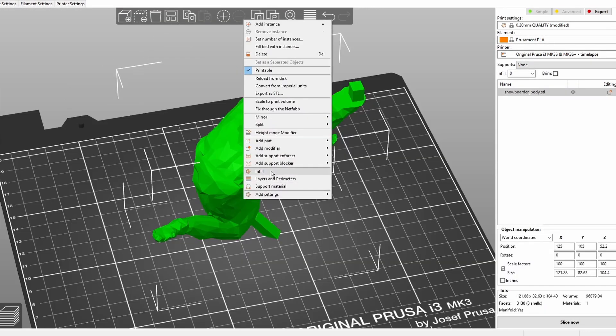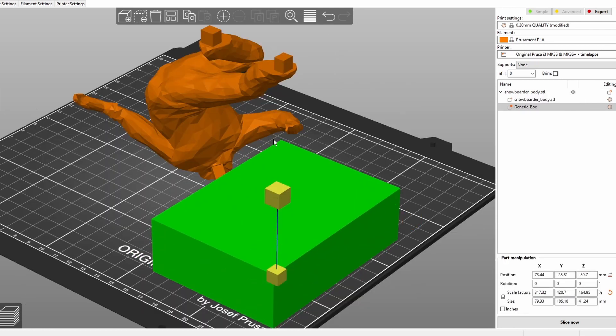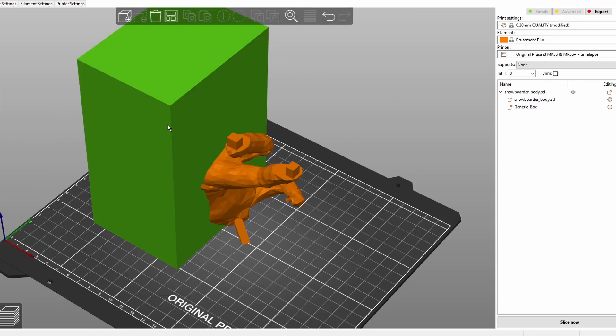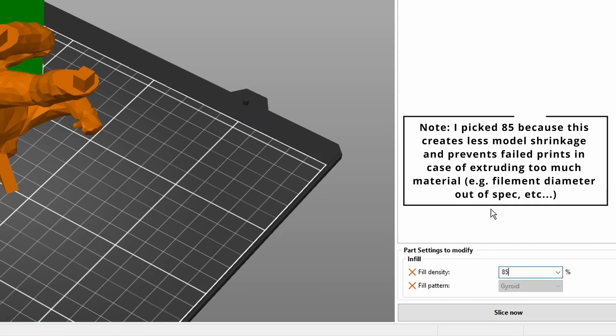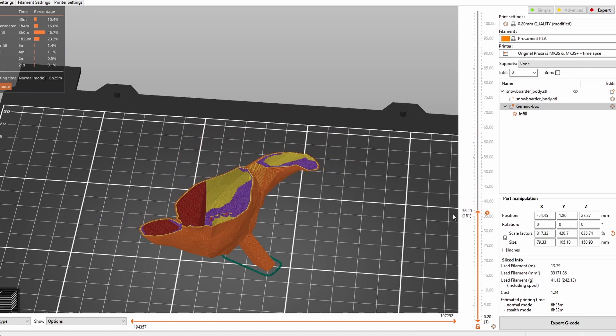We just load the model into the slicer and add what is called a modifier box. We scale and move the box so it overlaps with the backside. Now we can click on the box and specify a different value for the infill. So I will choose a value of 85 and leave the rest to zero. Et voila we have exactly what we need.